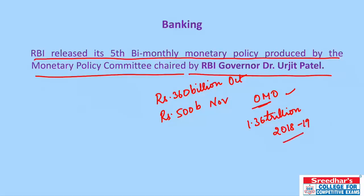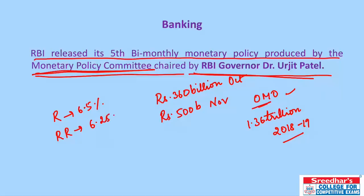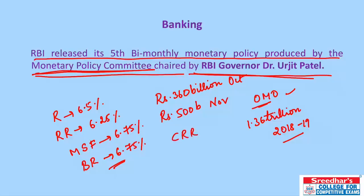The RBI's fifth bi-monthly monetary policy is produced by the Monetary Policy Committee chaired by Governor Urjit Patel. According to this, the repo rate stands at 6.5%, reverse repo rate at 6.25%, marginal standing facility rate at 6.75%, and bank rate at 6.75%. The CRR is 4% and the Statutory Liquidity Ratio stands at 19.5%.